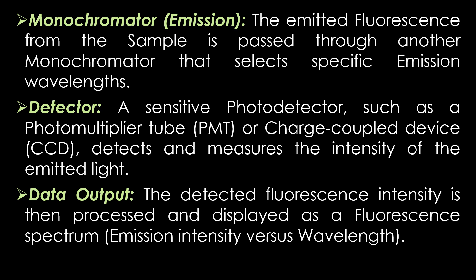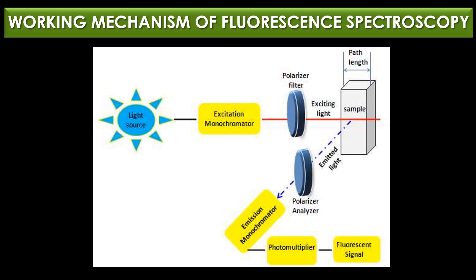The emitted fluorescence from the sample is passed through another monochromator, called the emission monochromator, which selects specific emission wavelengths. A sensitive photodetector, such as a photomultiplier tube or charge-coupled device, detects and measures the intensity of the emitted light. Finally, the detected fluorescence intensity is processed and displayed as a fluorescence spectrum showing emission intensity versus wavelength.